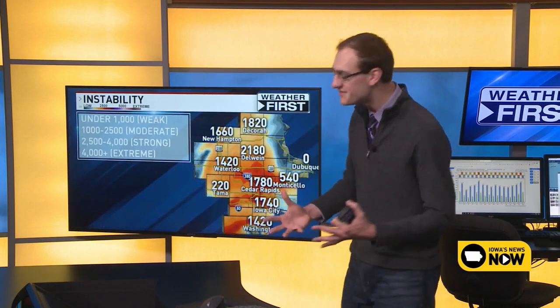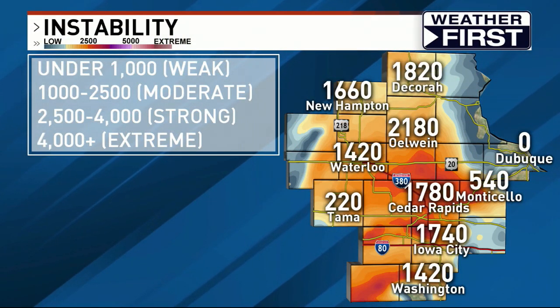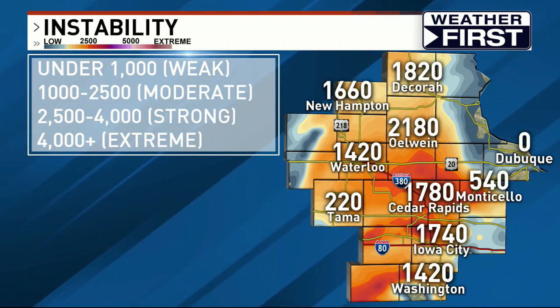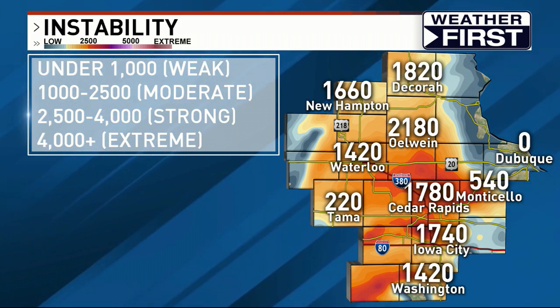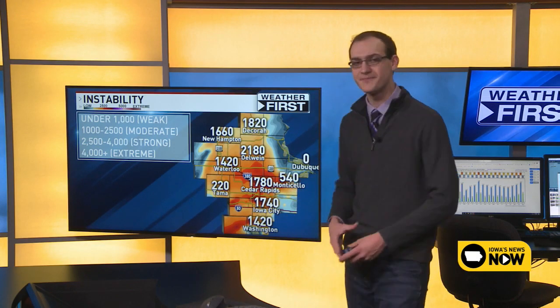Now let's talk about instability. Instability is essentially a measurement of how much energy is available to fuel thunderstorms. It's measured in joules per kilogram — we call it CAPE, convective available potential energy. If you're under 1,000 CAPE, it's generally pretty weak and not sufficient for severe thunderstorms. But if you're in that 1,000 to 2,500 zone, that is what we call moderate instability, and that's pretty much what we have in place today. Values in eastern Iowa are about 1,700, maybe 2,100 at the most — overall, moderate instability.